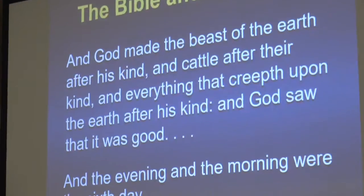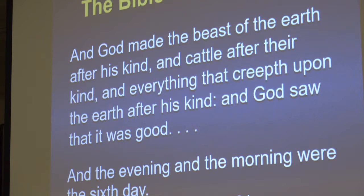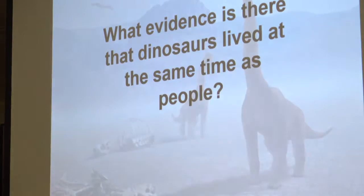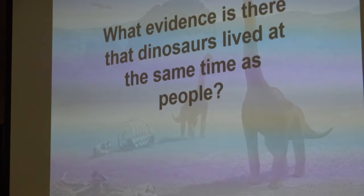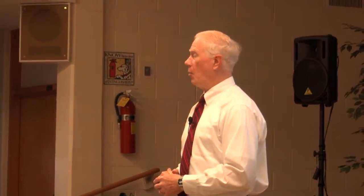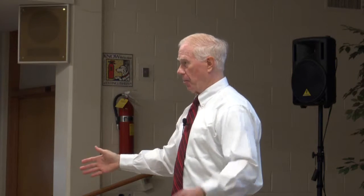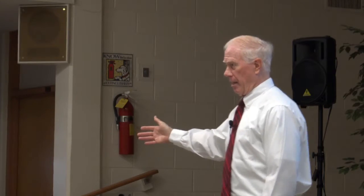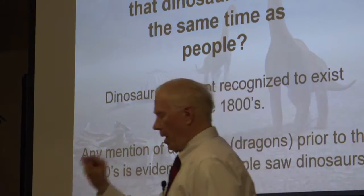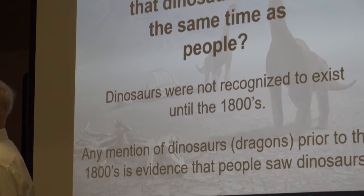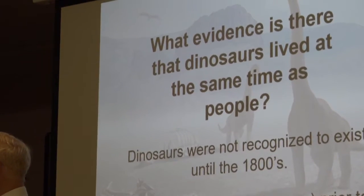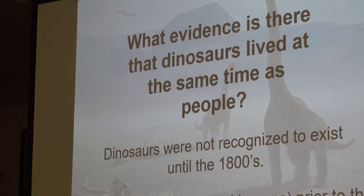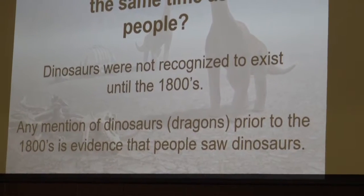The Bible of dinosaurs — Genesis 1: 'God made the beast of the earth after his kind, and cattle after his kind, and everything that crept on the earth after his kind. And God saw that it was very good.' So the Bible teaches man and dinosaurs lived at the same time. Do we need scientific evidence to believe the Bible? No, we don't. If you require scientific evidence to support God's word, then the Bible is not your authority — your understanding of science is. That's a dangerous trap. But God is so good he's going to give us a lot of evidence. Scientists did not know what dinosaurs were until the 1800s. So if we find pictures or stories about dinosaur-like creatures before the 1800s, that could be good evidence that people saw them living.